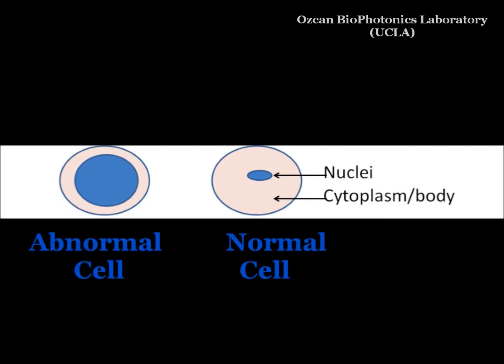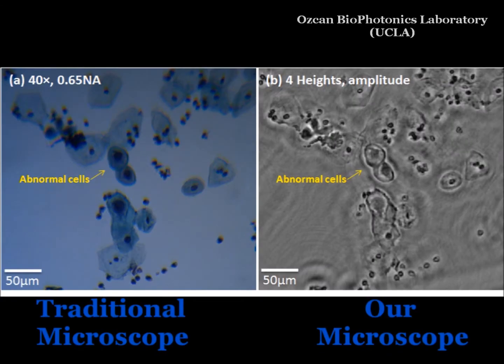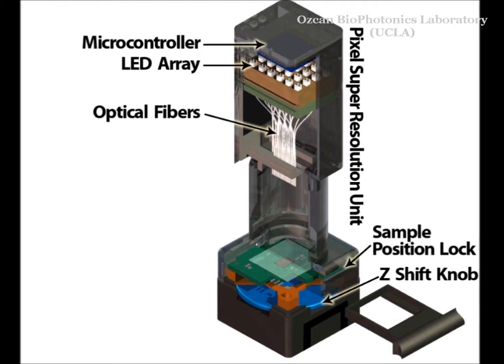To diagnose cervical cancer, we need to image abnormal cells. Abnormal cells have large nuclei in comparison to the cytoplasm. In this figure, we can see abnormal cells that were imaged by a regular microscope and by our holographic microscope.